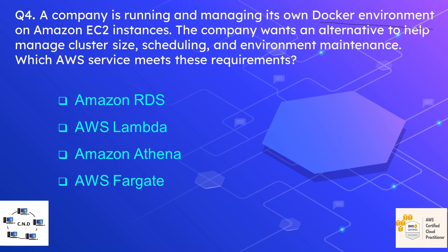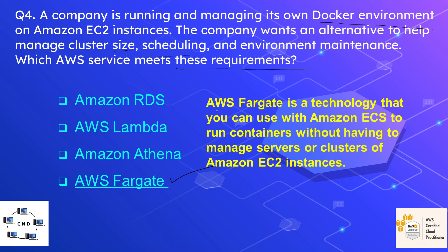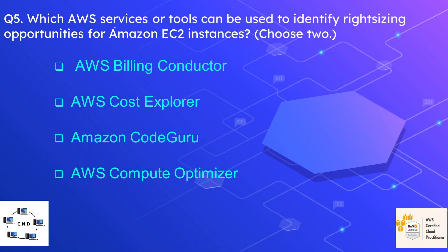Question number four: a company is running and managing its own Docker environment on Amazon EC2 instances. The company wants an alternative to help manage cluster size, scheduling, and environment maintenance. The options are Amazon RDS, AWS Lambda, AWS Athena, and AWS Fargate. The correct option is AWS Fargate — a technology you can use with Amazon ECS to run containers without having to manage servers or clusters of EC2 instances.